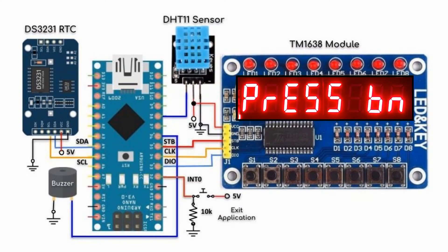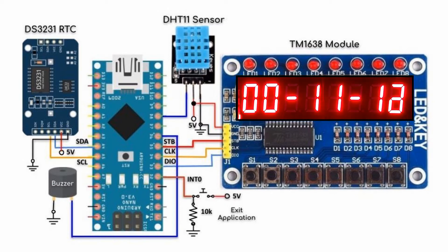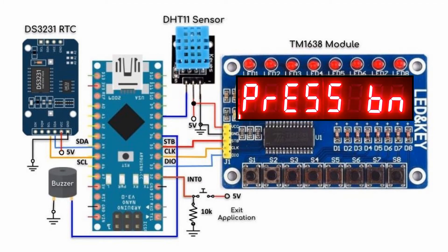And now for a quick demonstration. We press S4 to start the stopwatch application. We press the interrupt button to stop the stopwatch, then press the interrupt button again to go back to the main screen.